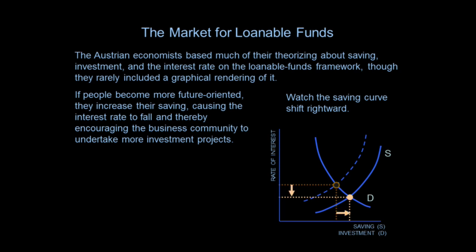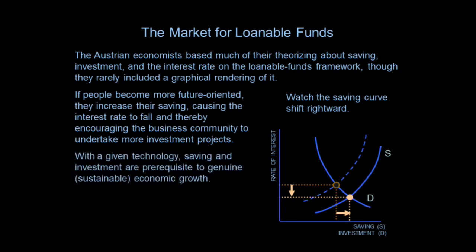So we see the interest rate falls and the amount of loanable funds available increases. With a given technology, saving and investment are prerequisites for genuine, sustainable growth. Think what it means to save: people go to work, produce things, get paid — it's called income. Some of which they consume, the rest they save. Whatever they save means some of their output is available for the business community to use. The business community takes command of those unconsumed resources by borrowing the savings from income earners and buying resources that are not consumed to increase the productive capacity of the economy.